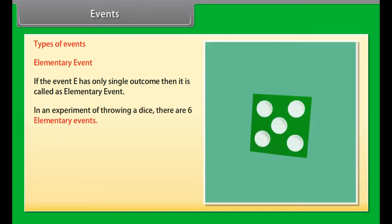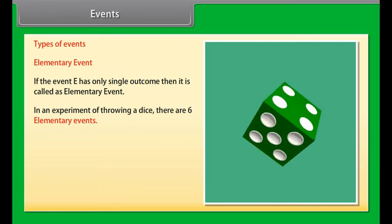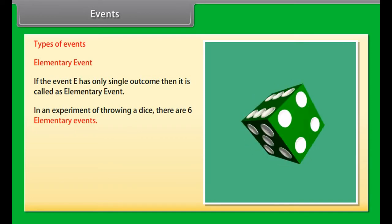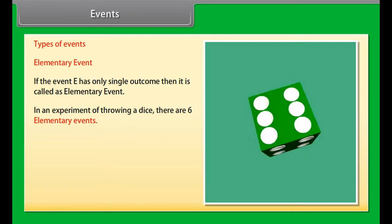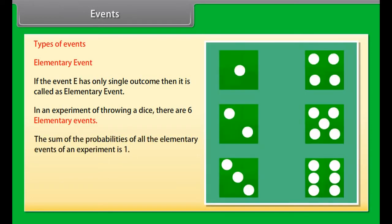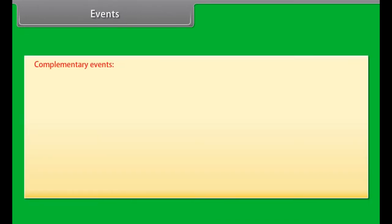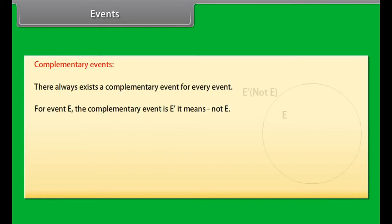Types of events. Elementary event: if the event E has only a single outcome, then it is called an elementary event. In an experiment of throwing a dice, there are 6 elementary events. The sum of the probabilities of all the elementary events of an experiment is 1.